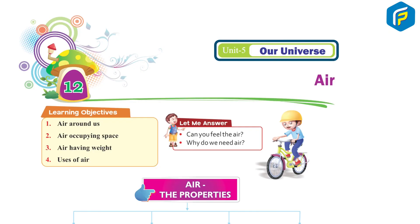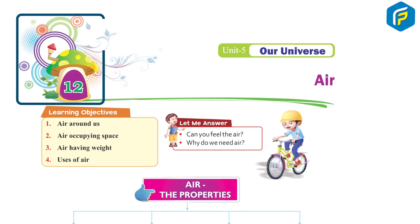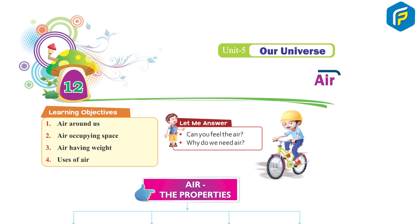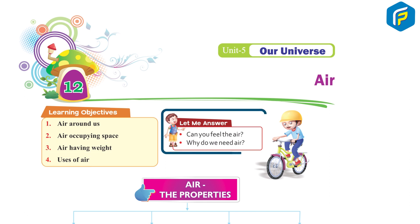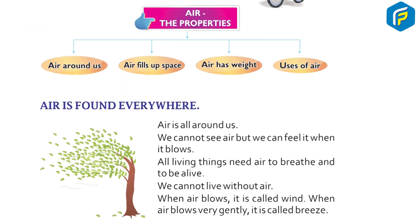Unit 5: Our Universe. Chapter 12: Air. Learning objectives: 1. Air around us, 2. Air occupying space, 3. Air having weight, 4. Uses of air. Can you feel the air? Why do we need air?